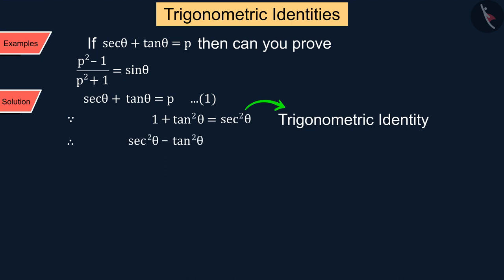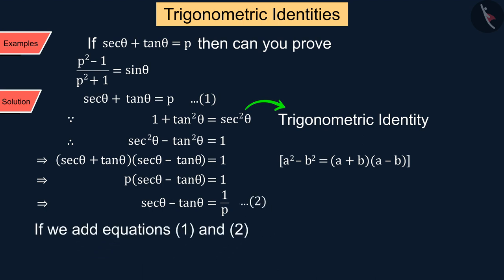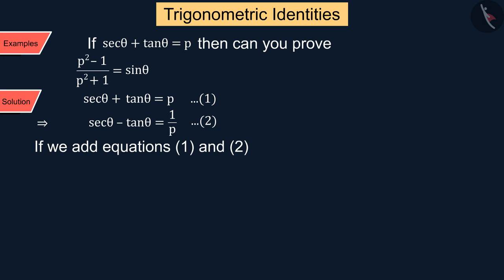Which we solve by keeping sec² θ minus tan² θ as 1. And from the equation we know that sec θ plus tan θ is equal to p, which is substituted here. We get sec θ minus tan θ is equal to 1 by p, which is represented by equation (2). Now if we add equations (1) and (2)...